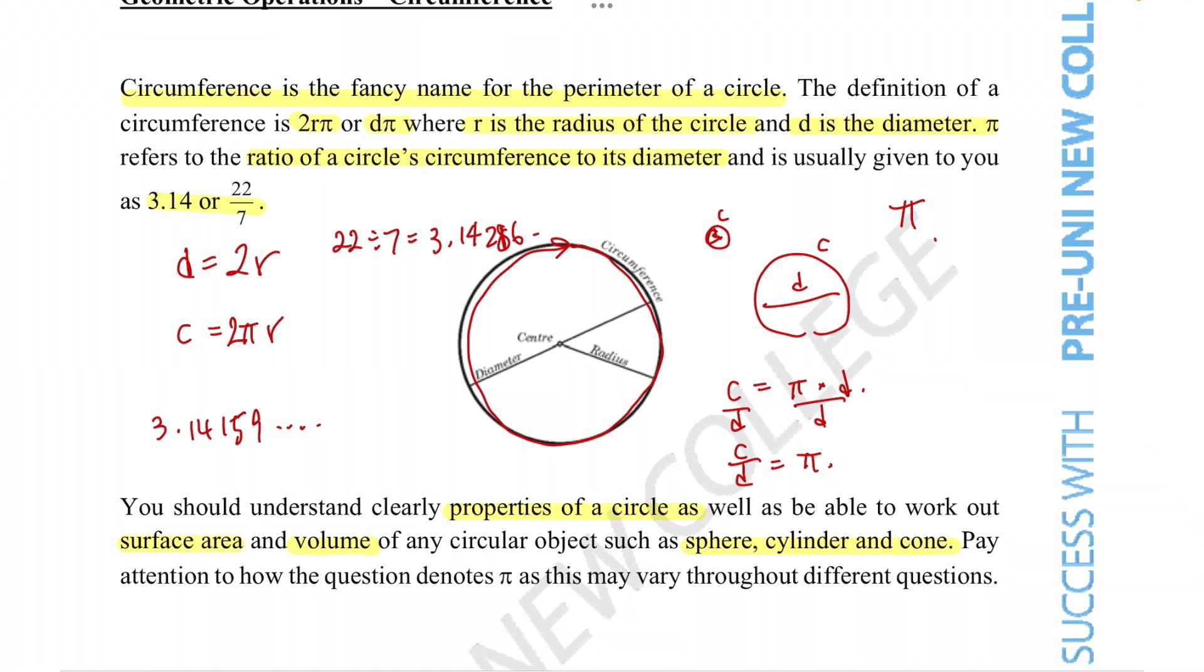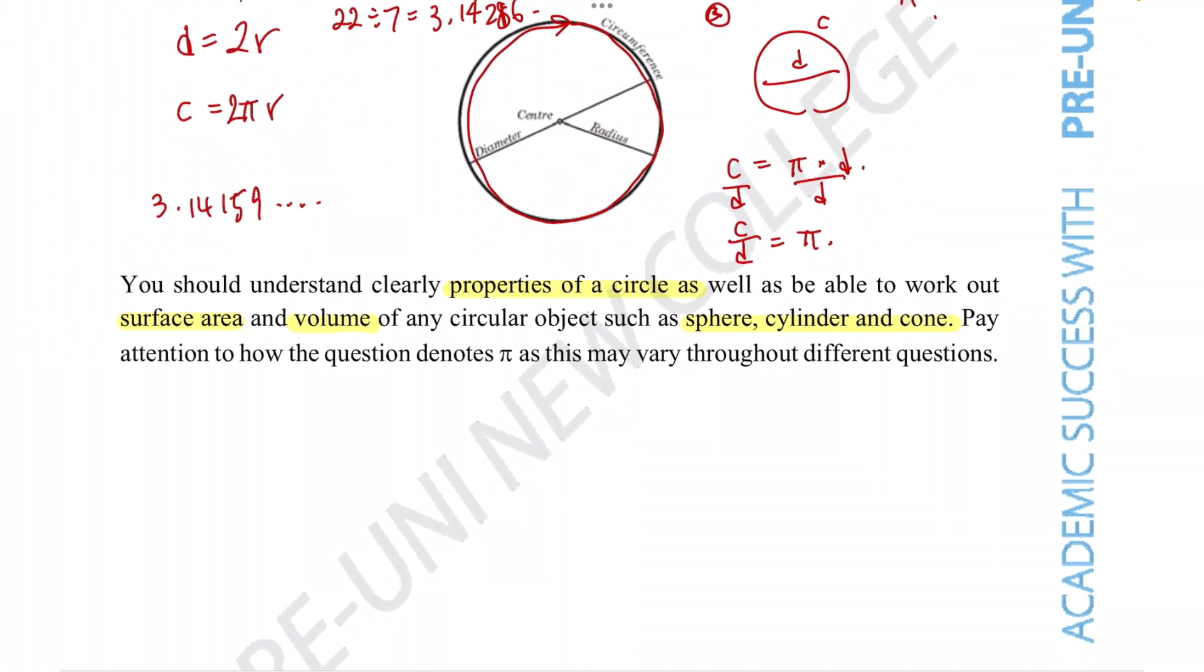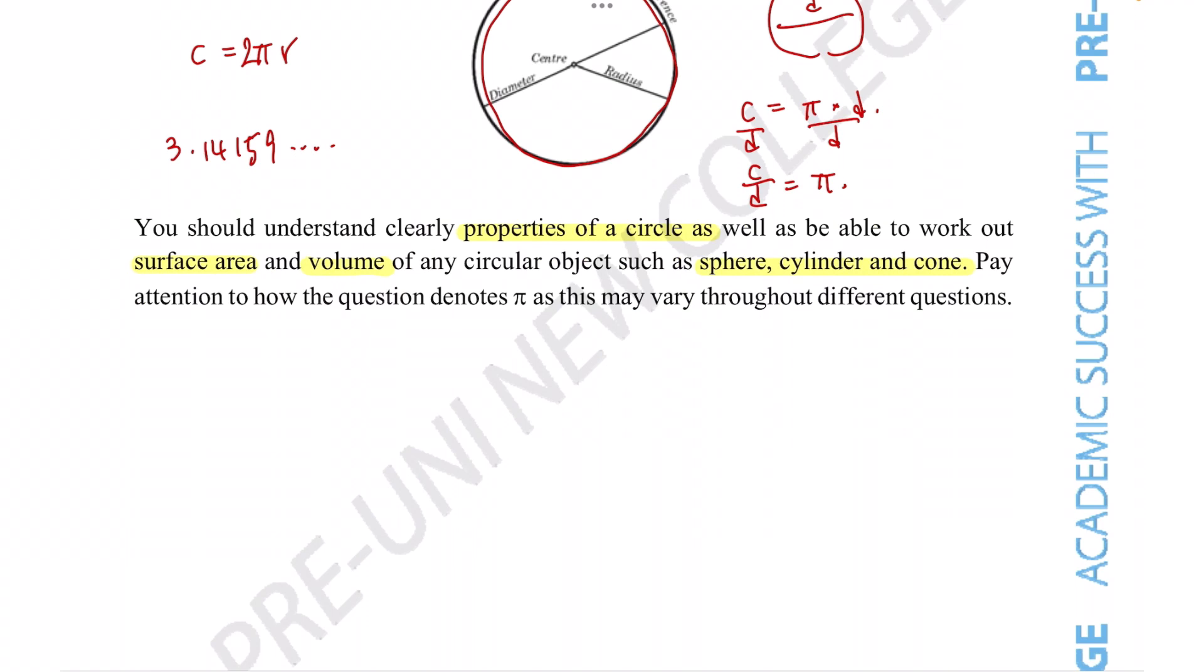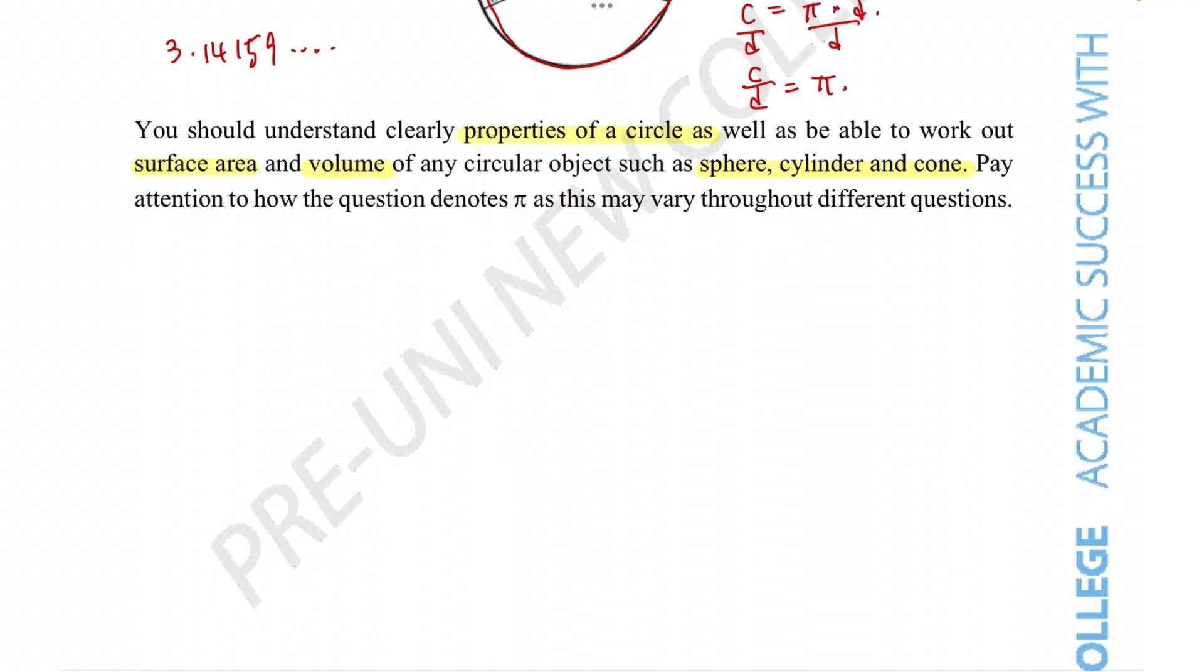Now one last thing is that because the circumference is related to the diameter and things like that, we are often required to use the circumference to figure out things like surface area or volume because it allows us to figure out what the diameter is. And so those things are going to be quite linked. So let's talk about the common equations we may need for these types of questions.